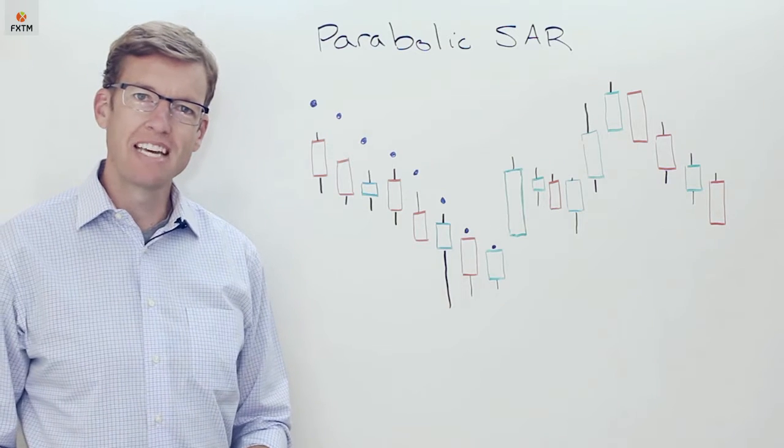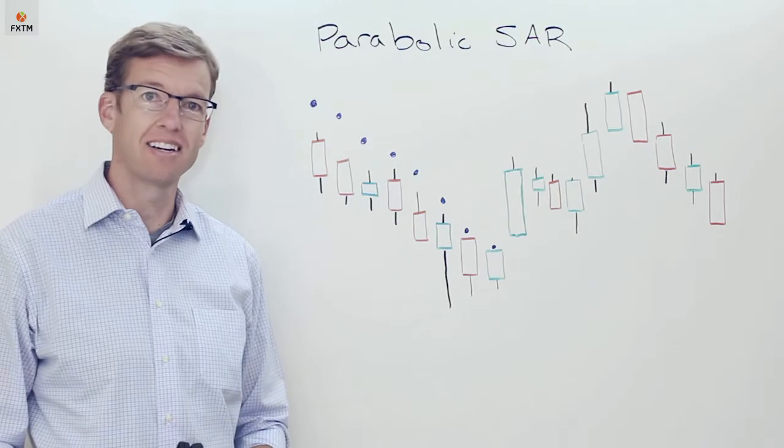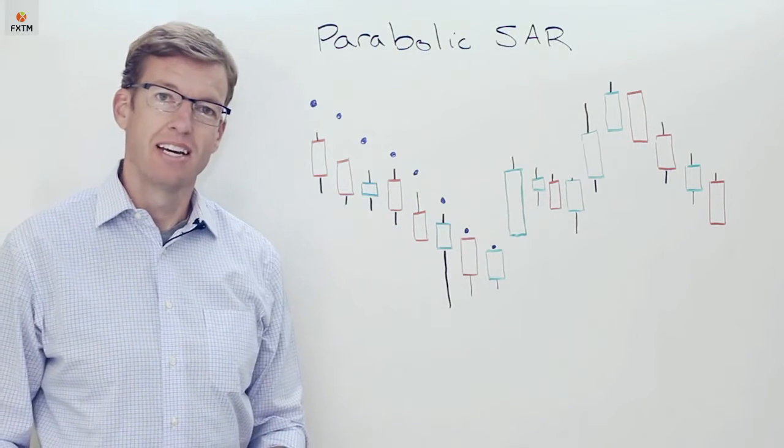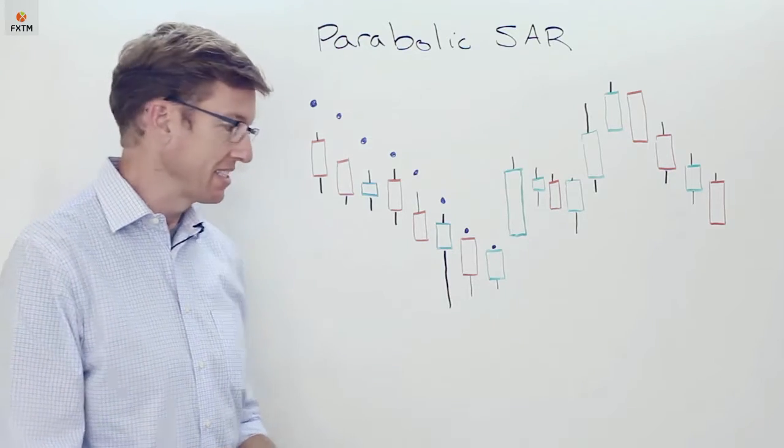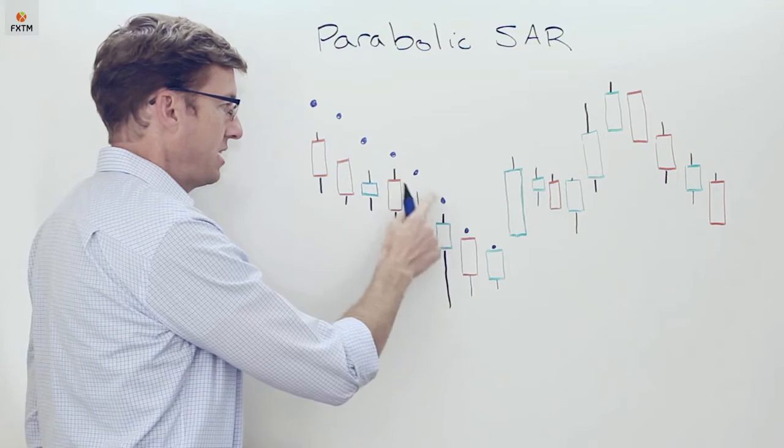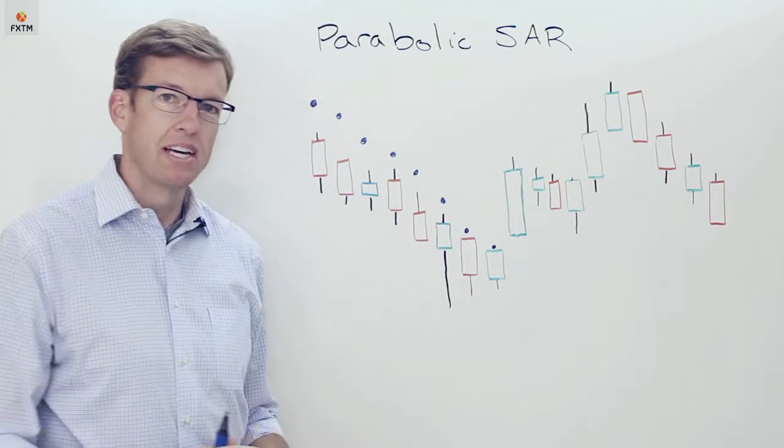In this episode of the FXTM educational series, we're going to be taking a look at the Parabolic SAR indicator, or parabolic stop and reverse. It's drawn on the chart as a series of dots. In the case of a downtrend, the dots appear above the bars or candles, and in the case of an uptrend, the dots will be underneath the bars or candles.